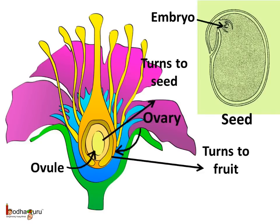After pollination, the ovary swells up and turns into the fruit wall, which protects the seed. The ovules, which are bead-like structures inside the ovary, turn into seeds. The seed has a baby plant — the embryo inside the seed is the baby plant. The embryo comes into existence after pollination in the flower. Hence we can say the flower is the reproductive organ of the plant.